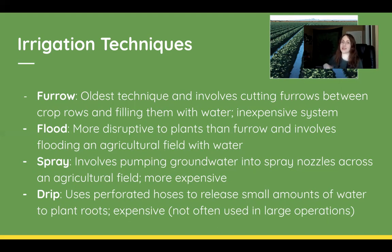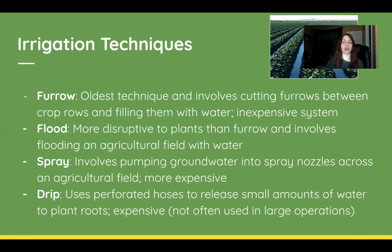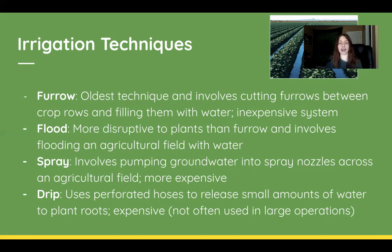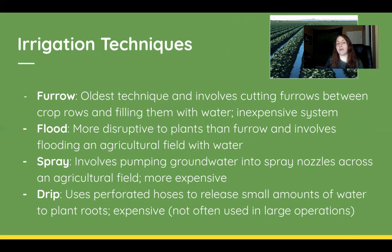Spray irrigation involves pumping groundwater into spray nozzles across an agricultural field. It's about 75 to 95% effective and efficient. It is more expensive than older methods because it's relatively modern.